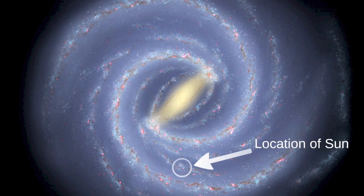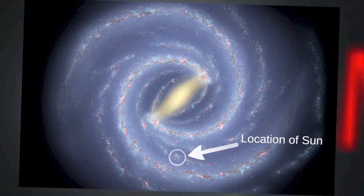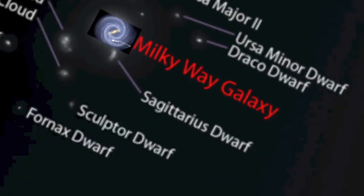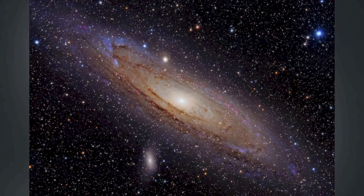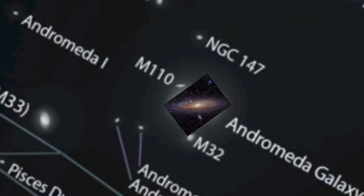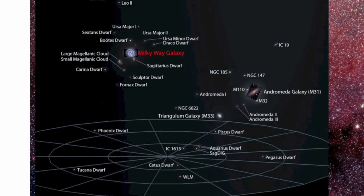The Milky Way is not an isolated galaxy. It is one of nearly 60 galaxies that comprise what astronomers call the local group. Most of these galaxies are small compared to the Milky Way, but the Andromeda Galaxy is about the same size as our own, with a similar spiral structure. The Andromeda Galaxy is 2.5 million light years away from the Milky Way, making it our closest large neighbor in extragalactic space.